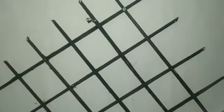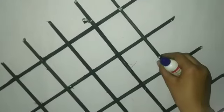After joining all the sticks, your pattern should look like this. Then take the flowers we made earlier and start applying them the way I am doing.